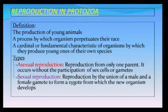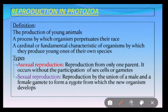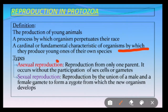Let us learn reproduction in protozoa today. Reproduction is the process of production of young animals. It is also defined as a process by which the organism perpetuates their race, and it can be defined as a cardinal or fundamental characteristic of organisms by which they produce young ones of their own species or race. Reproduction is the process of continuation of one's race or kind in nature.